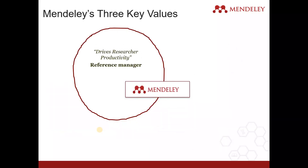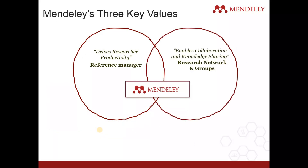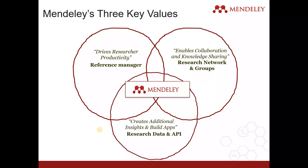Mendeley has three key values that drive researcher productivity: first, through the reference manager; second, it enables collaboration and knowledge sharing with the help of research networks and groups; and third, it creates additional insights and builds apps with the help of research data and its API. You follow four steps to put citations and generate references automatically.